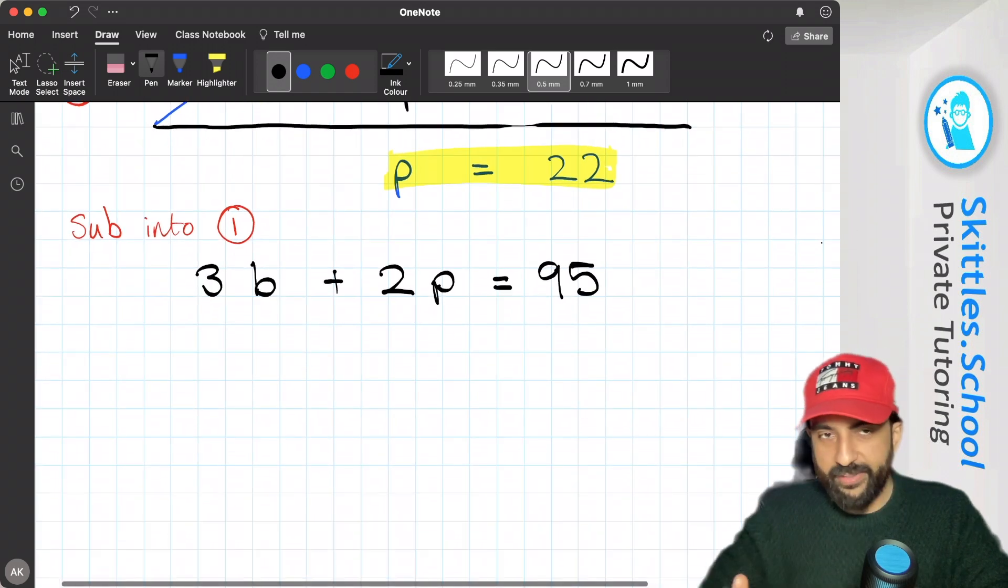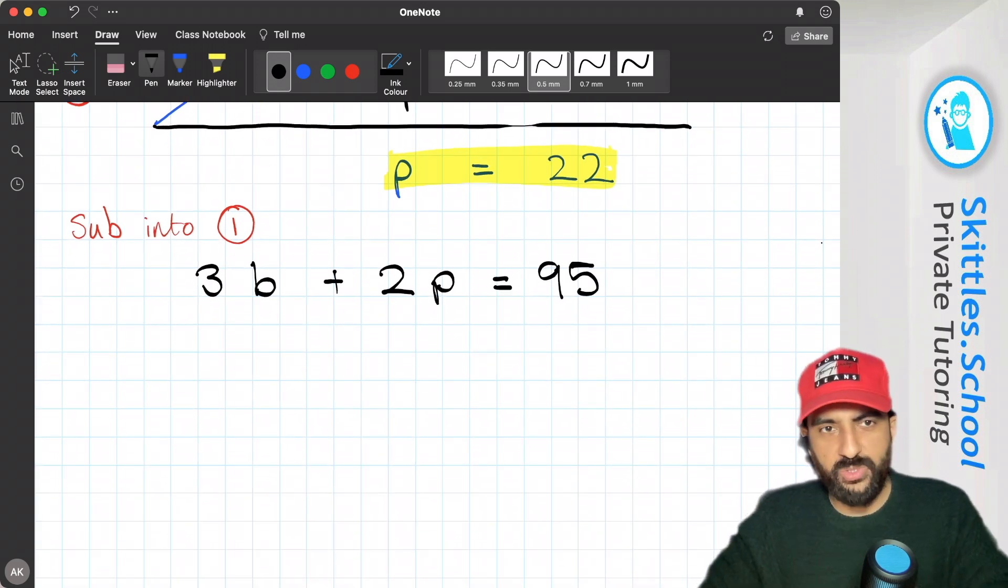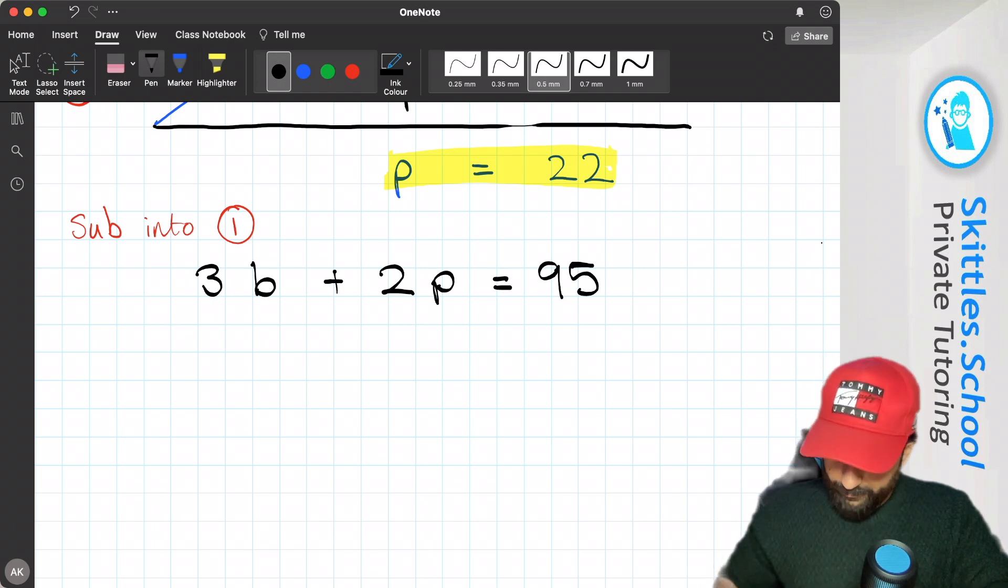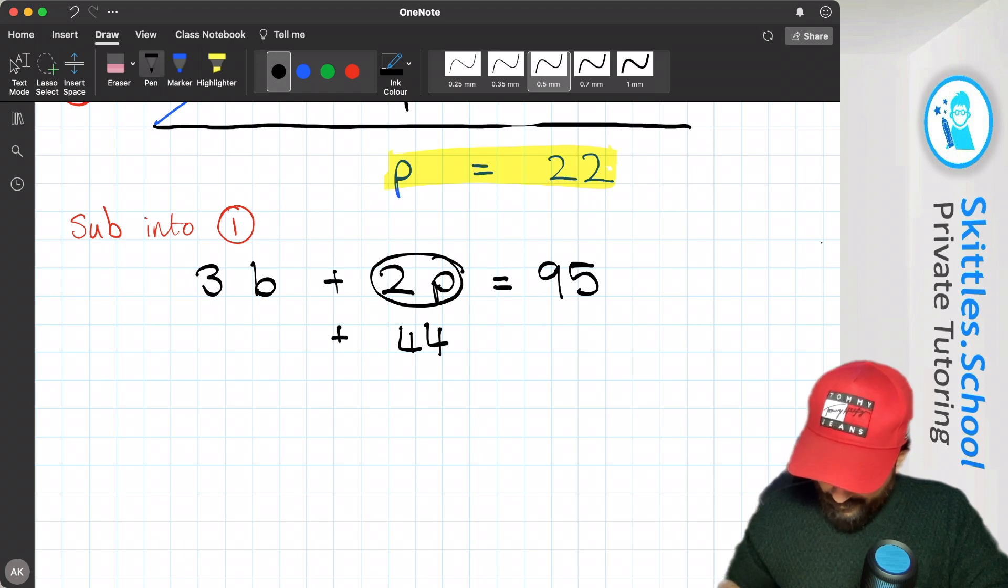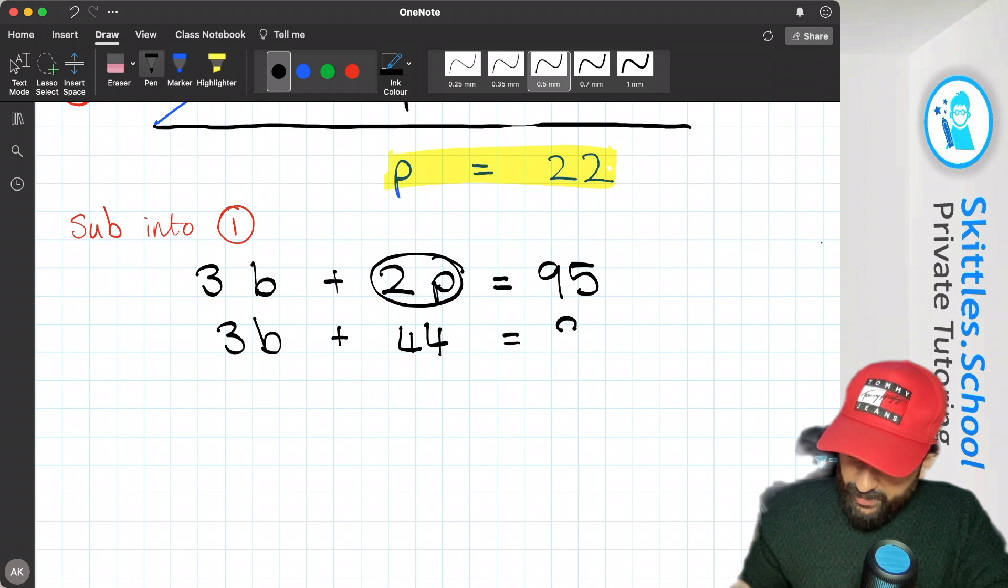Now we've already worked out the value of pears. A pear is 22. So 2 pears is 44. So this we can replace for 44. Now we've got 3b plus 44 is 95.